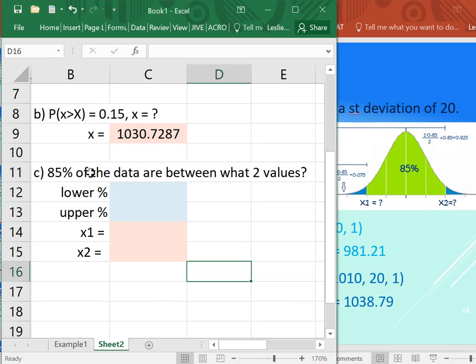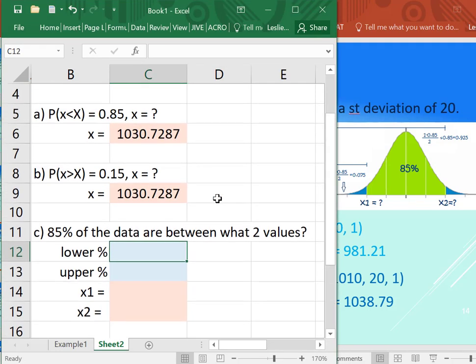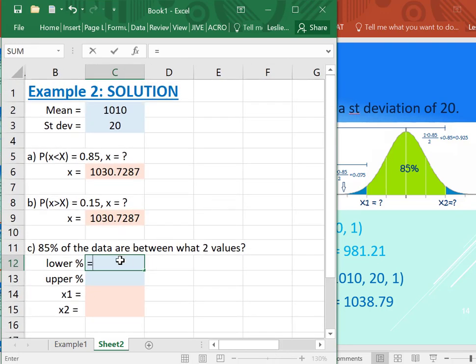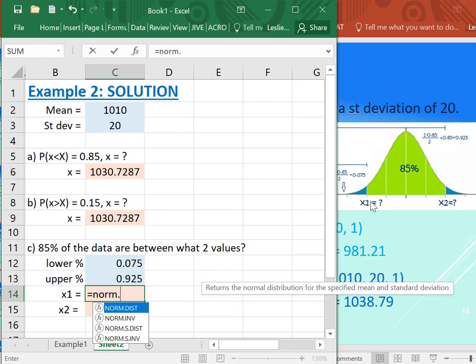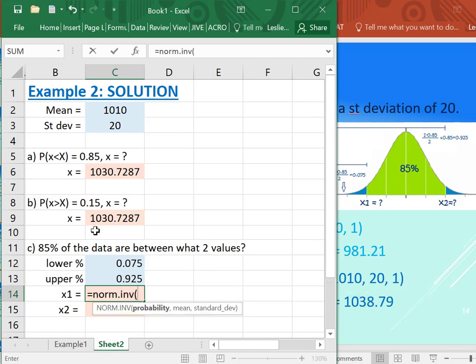So 85% of the data are between what two values. We're dealing with the same example here. So first of all, let's get our lower percent in Excel. So it would just be 1 minus the 0.85, divide that by 2, and the upper would just be that amount plus the 0.85. And then to get our X1 here, just NORM.INV of this 0.075, grab the mean, grab the standard deviation.